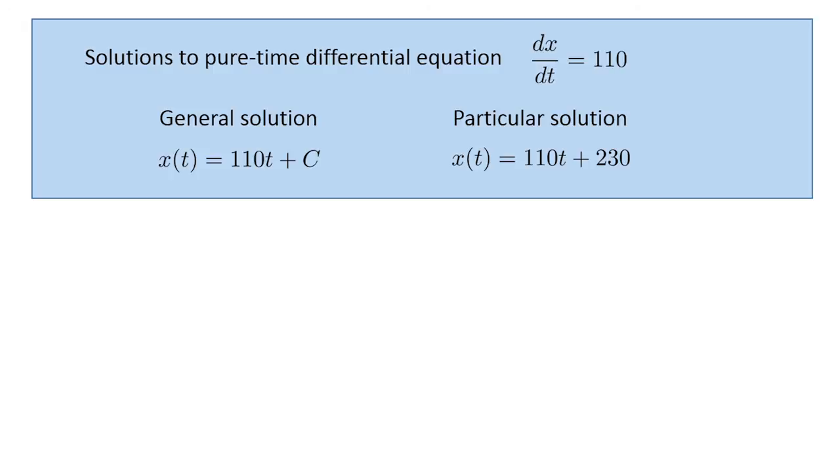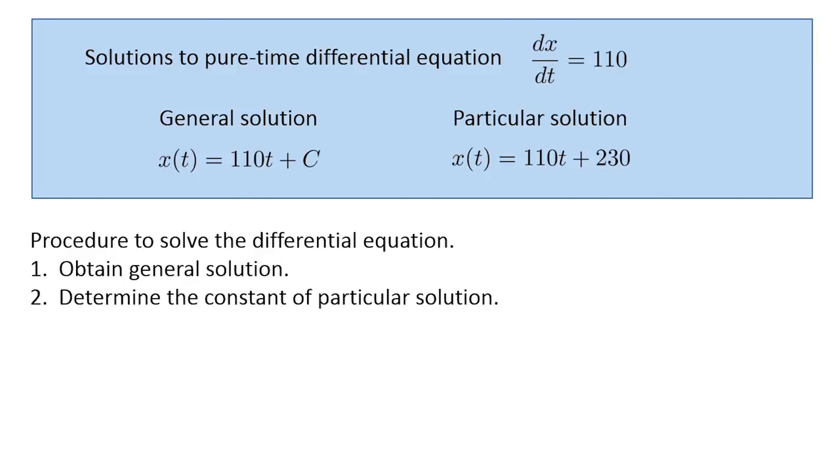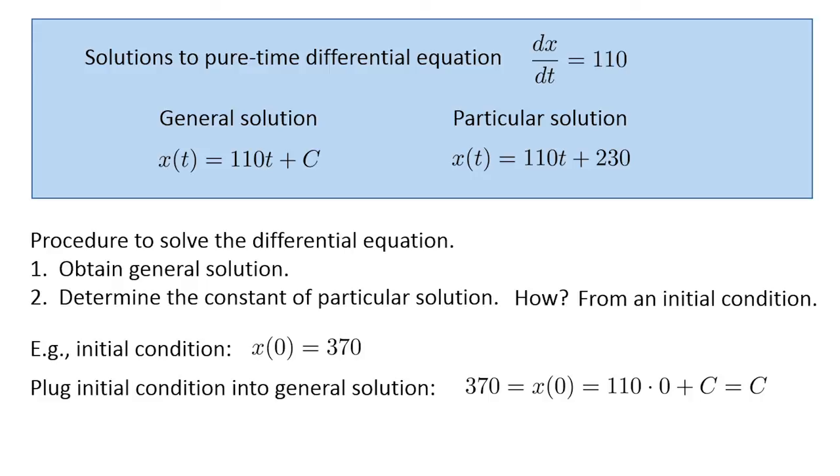The procedure to solve a pure-time differential equation is to first determine the general solution, and then pin down the value of the constant to get the particular solution. How do we pin down the constant? We need more information about the solution. An initial condition, i.e., the value of x at t equals zero, would work nicely. For example, if we were given the initial condition x(0) equals 370, we can plug that value into the general solution. Substitute t equals zero into the formula for the general solution to determine that x(0) equals C. Therefore, C must be 370, and we have the particular solution x(t) equals 110t plus 370.